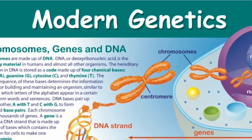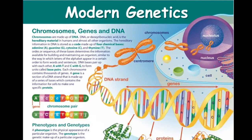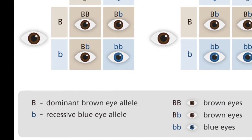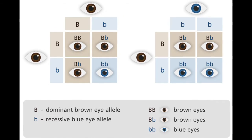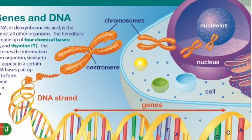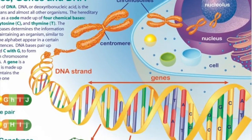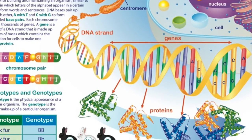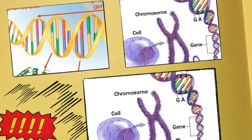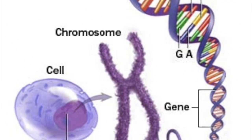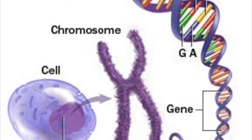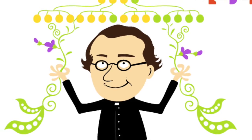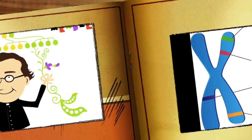Mendel laid the foundation for modern genetics, but there were still a lot of questions he left unanswered. What exactly are the dominant and recessive factors that determine how organisms look, and how do these factors work? Since Mendel's time, scientists have discovered that genetic material is made out of DNA — it is DNA that makes up the hereditary factors Mendel identified. By applying our modern knowledge of DNA and chromosomes, we can explain Mendel's findings and build on them.